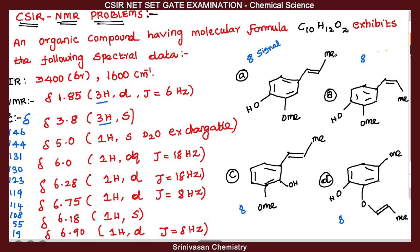Option D has a 3-hydrogen methyl group, and the remaining are all single hydrogens: 1H, 1H, 1H, 1H, 1H, 1H, 1H, 1H. Comparing all the compounds, if you have a 3-hydrogen set, the remaining all are single hydrogen. Option D has a 3-hydrogen set and the remaining all are single hydrogen.